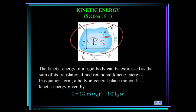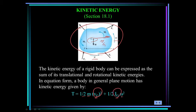The kinetic energy of this rigid body is defined as one-half times the mass times the velocity of the mass center squared, plus one-half the moment of inertia about the mass center times omega squared. Make sure that you use the velocity of the mass center and the moment of inertia about the mass center.